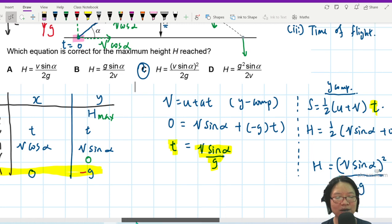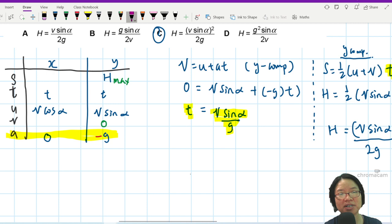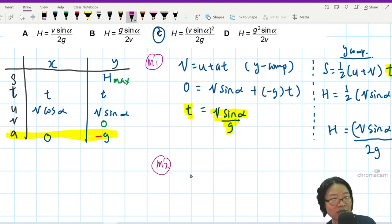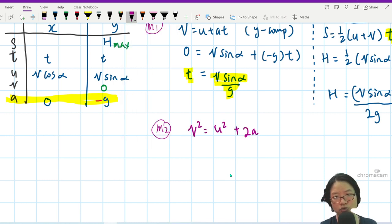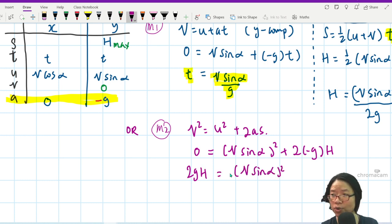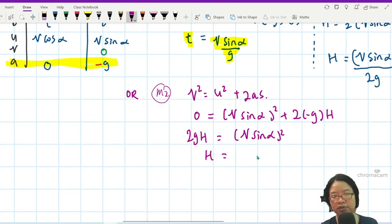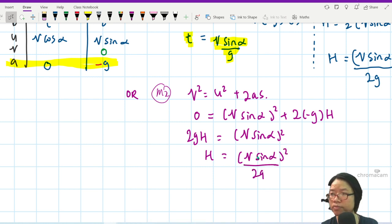Some of you may be like, we list down Stuva so that we know which equation to use and save some time. So this is method 1, M1. Method 2, I can save some time by using an equation with no T. The equation with no T would be V square is U square plus 2AS. So method 2, your V square is 0, your U square is V sin alpha square plus 2 negative G. The vertical displacement is H. So again, I can rearrange all of this. I will get 2GH is V sin alpha square, and your H will be V sin alpha square over 2G.